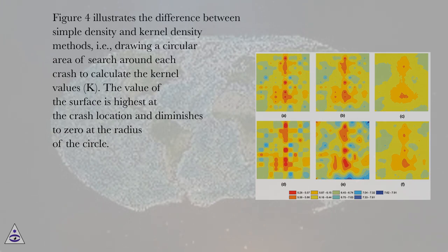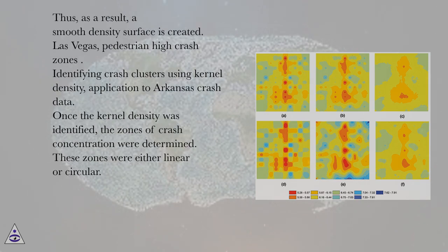Drawing a circular area of search around each crash to calculate the kernel values. The value of the surface is highest at the crash location and diminishes to zero at the radius of the circle. Thus, as a result, a smooth density surface is created.